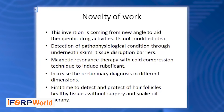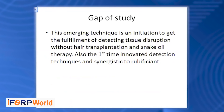Now we come to the novelty of work. This research comes from a new angle of advanced therapeutic drug activities. Magnetic resonance therapy compression increases preliminary diagnosis in different dimensions. This is the first time detecting hair follicle products and healthy tissue with scanning and straight coils. The gap in study is also a first-time innovative detection technique and synergy via rubefacient, improving blood flow and emerging the technique of initiation, fulfilling the detection of tissue destruction.